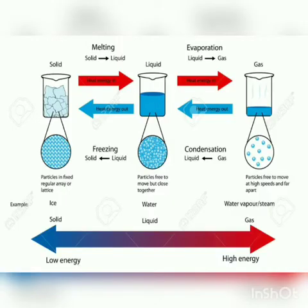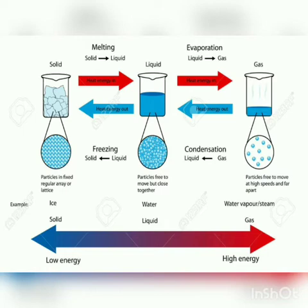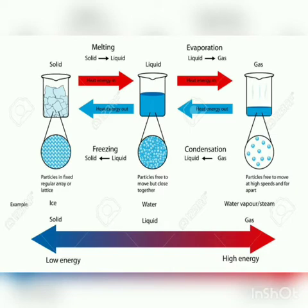Matter always keeps on changing its state. Changing of state are physical changes in matter — the change is only physical and does not involve any chemical reaction. They are reversible changes that do not involve changes in matter's chemical properties, meaning the chemical properties of the matter remain the same even if the state is different. Common changes of states of matter include melting, freezing, sublimation, deposition, condensation, and vaporization.